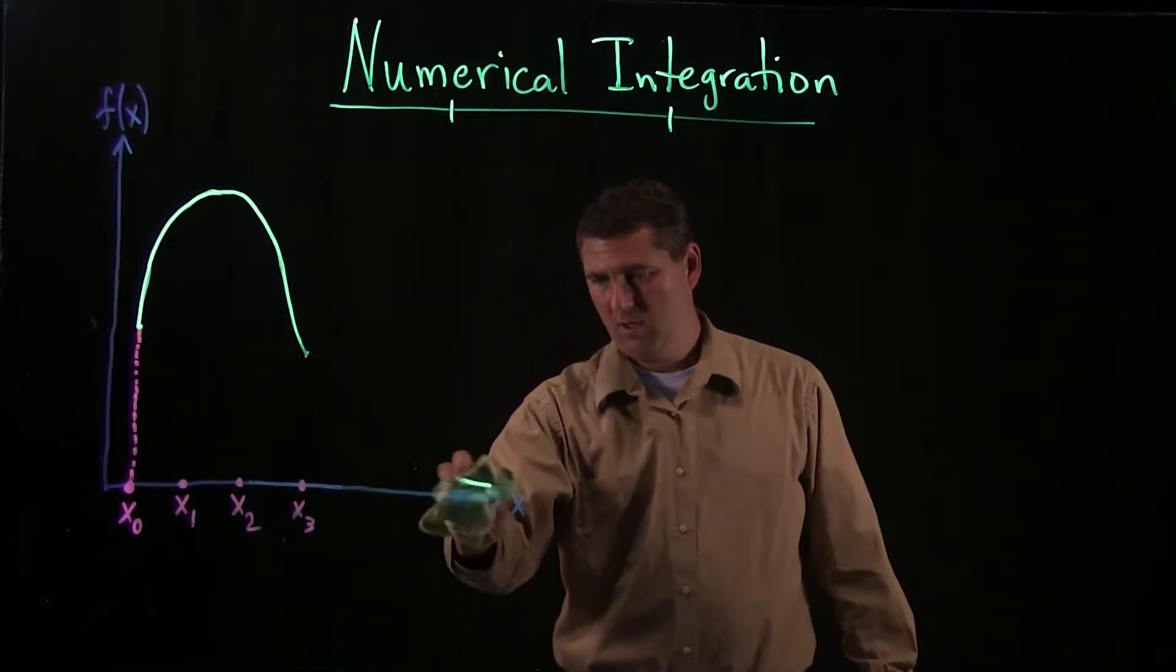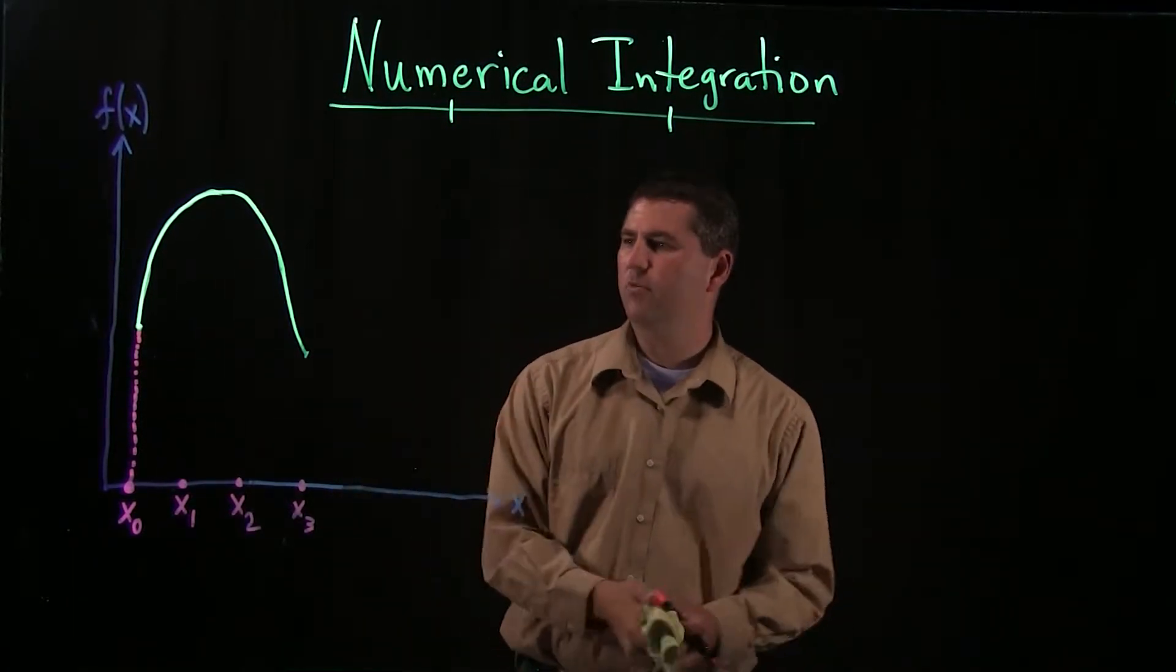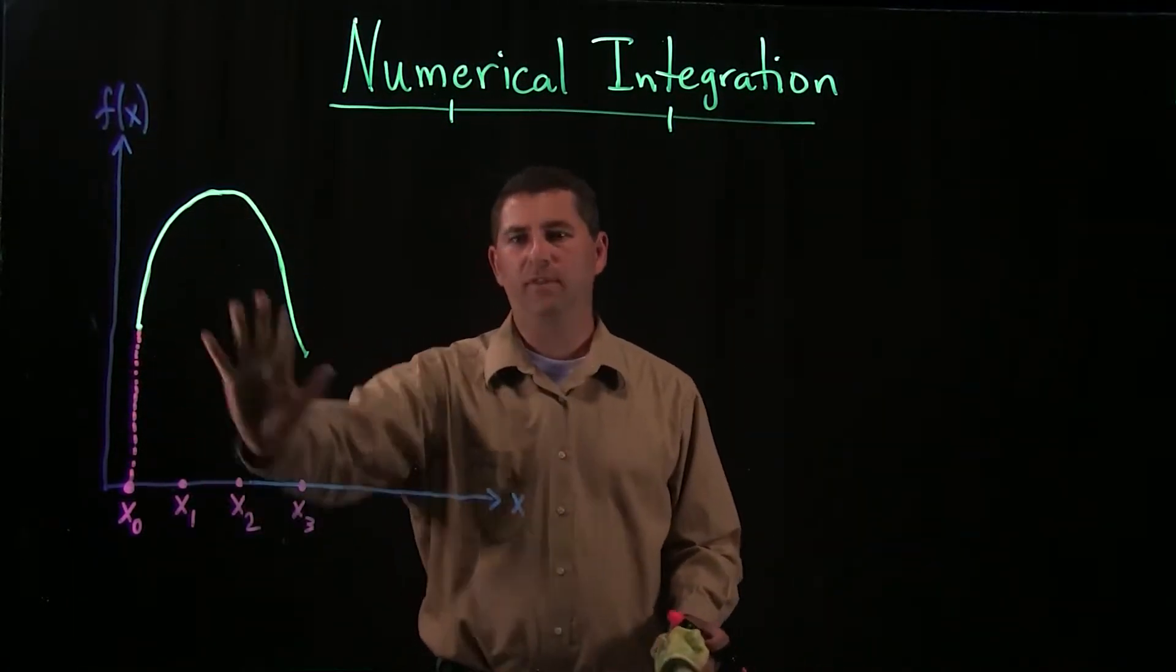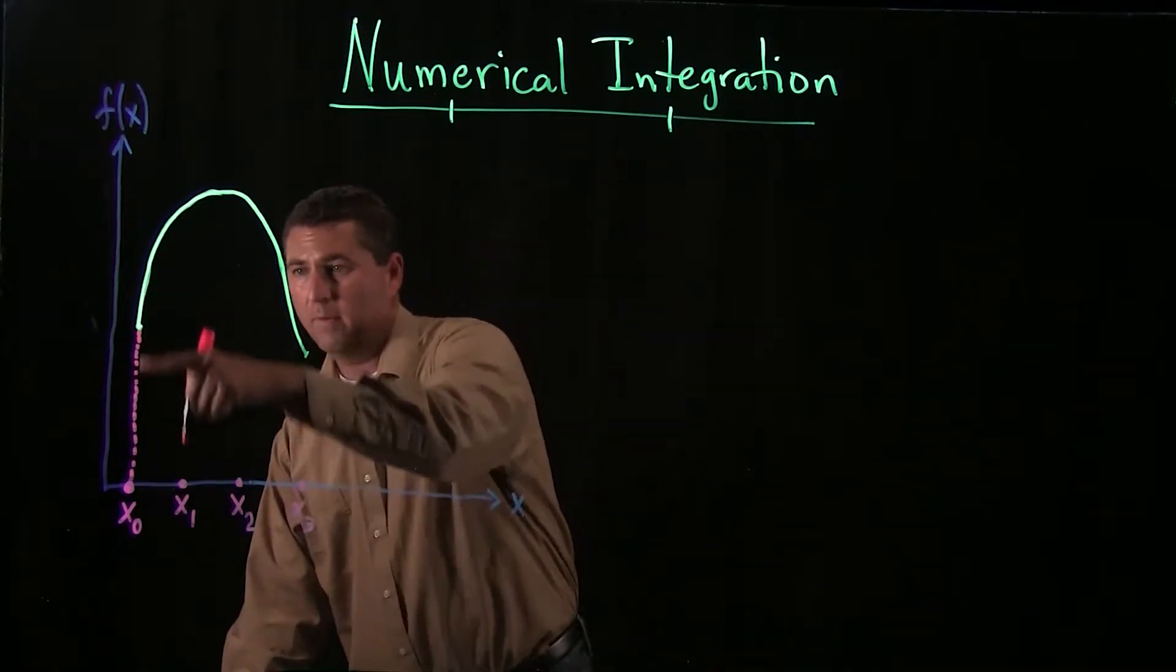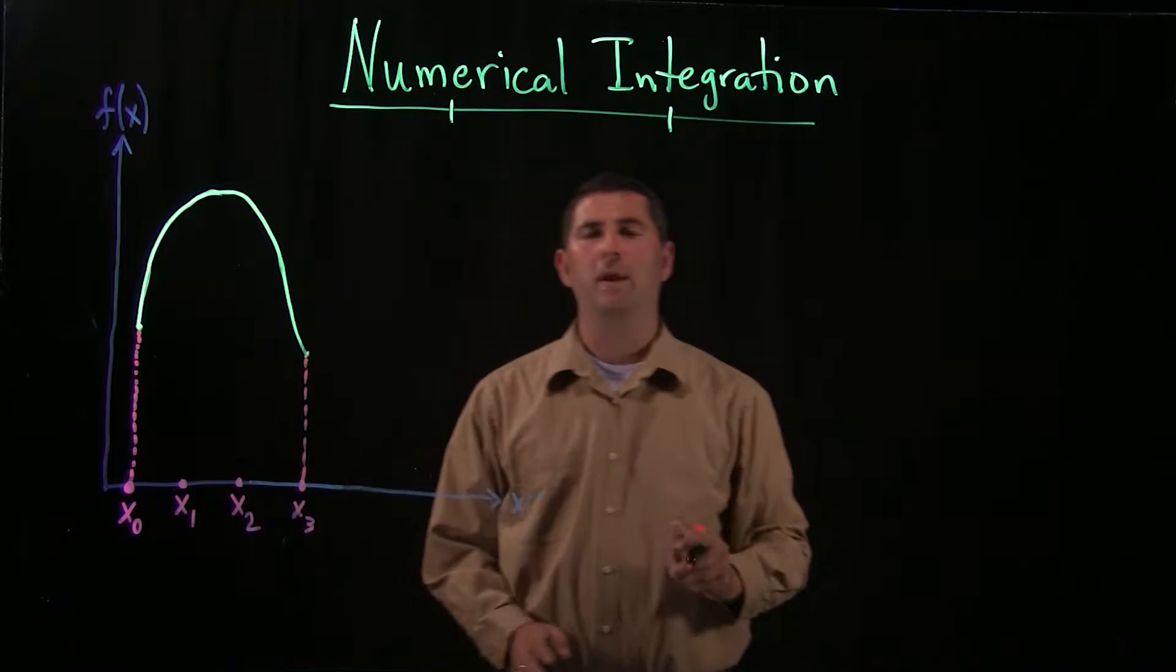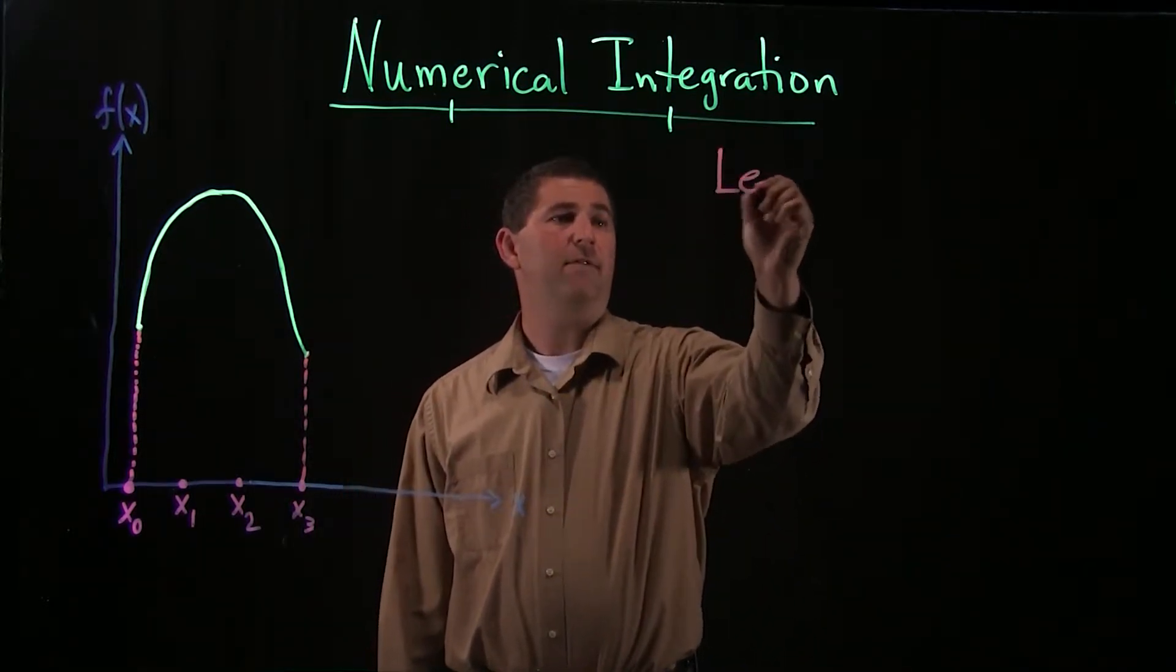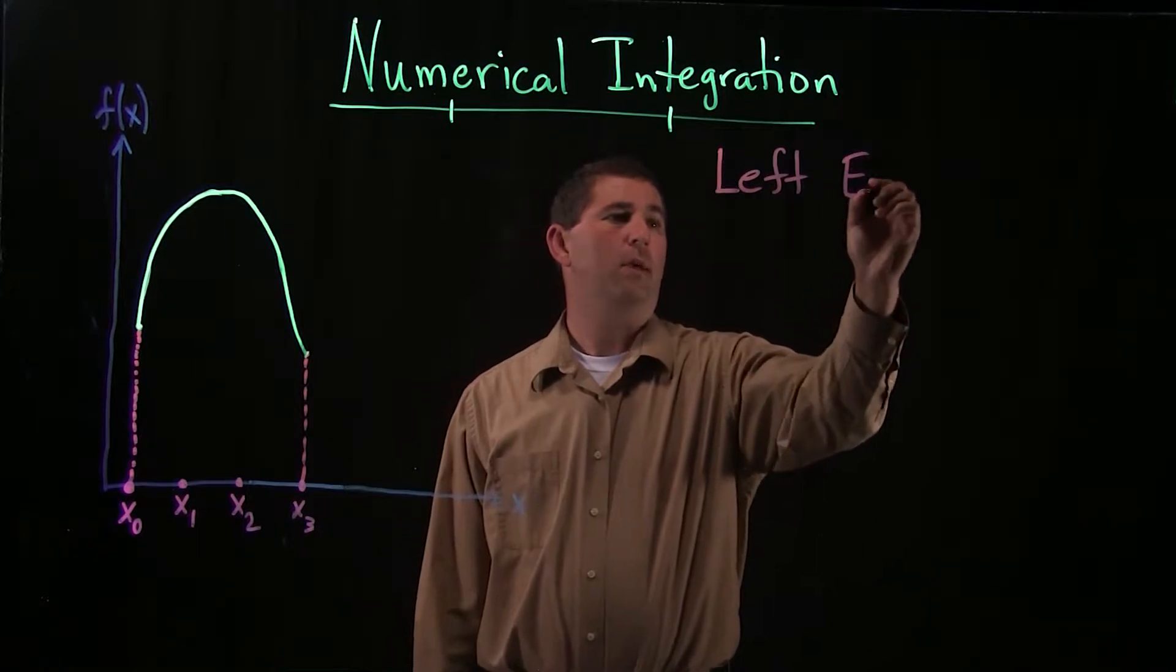So I'm going to erase all the stuff to the right of this point x3. So I just want to find the area underneath this curve from x0 all the way up to x3. And the way we're going to approach it, this first one, is called a left endpoint approximation.